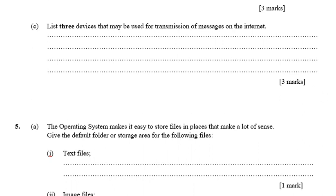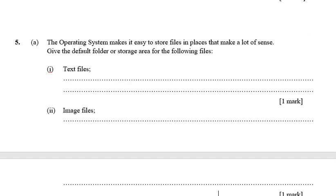Part (c) says: list three devices that may be used for the transmission of messages on the internet. These include: a computer, a modem, a telephone, a router, and a mobile phone. This question has appeared two or three times in previous years — they just change one or two things.